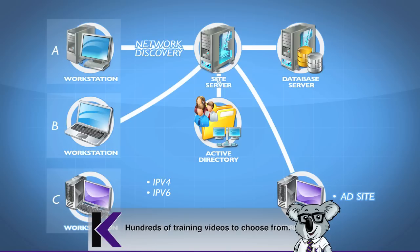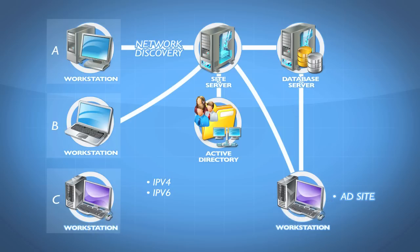Either way, whether we're doing a network discovery pulling in information on those devices, or doing an Active Directory query pulling in device and user information, we are getting information into our database. What it generates is what's called a DDR — a device discovery record. Those records get entered into the database so that we can see through the Config Manager console all of this information and start to manage these elements.